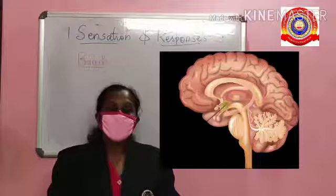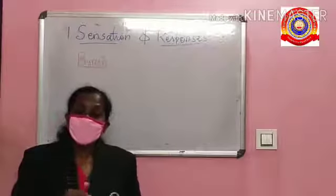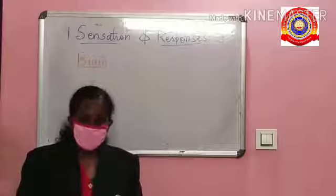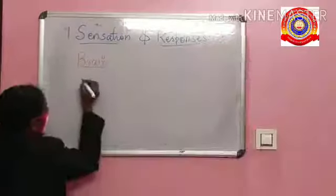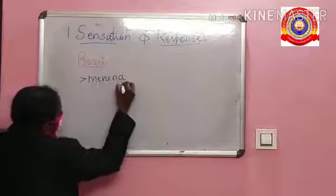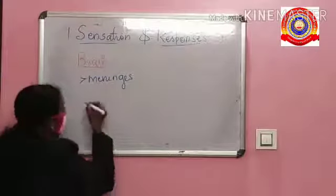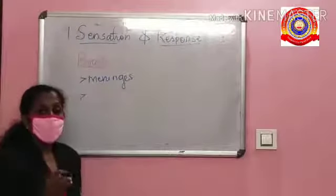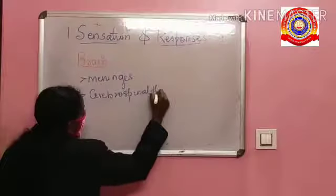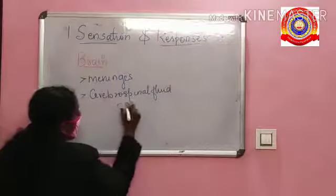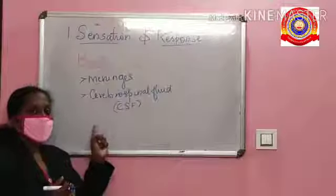The brain is the center part of the nervous system. The brain is protected by the hard skull. It contains three layers called the meninges — a three-layer membrane surrounding the brain. In the innermost layer there is a fluid called cerebrospinal fluid (CSF).